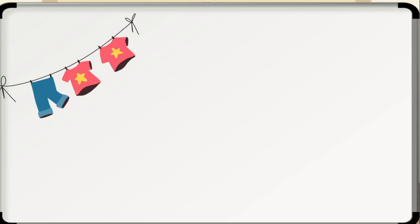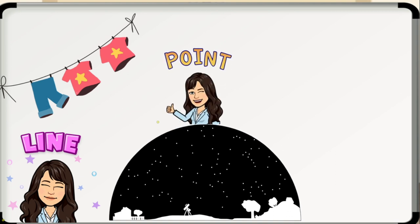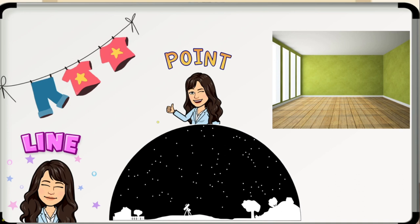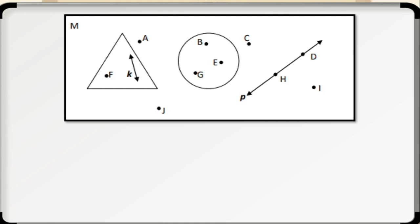Next, clothesline. Does it represent a point, a line, or a plane? Okay, obviously, it is a line. Number five. Star in the sky as seen from the Earth. Yes, it is a good picture of a point. And lastly, a wall. Very good. It does represent a plane.